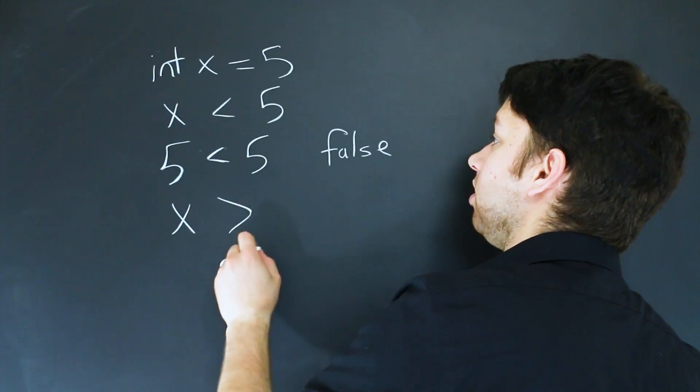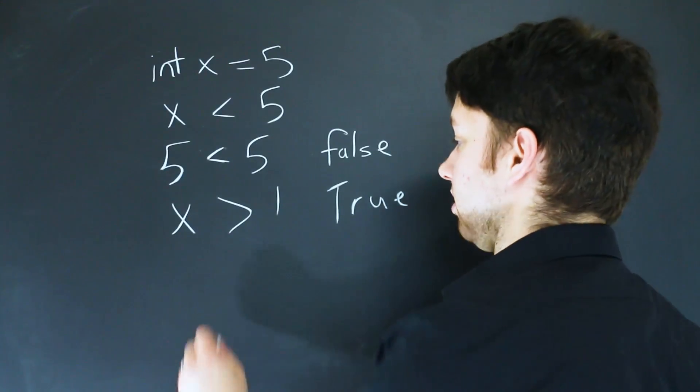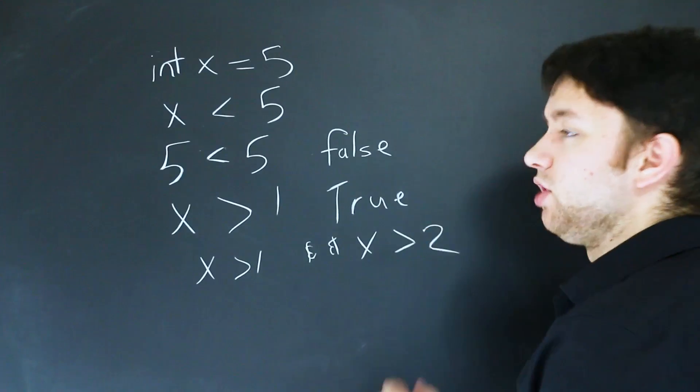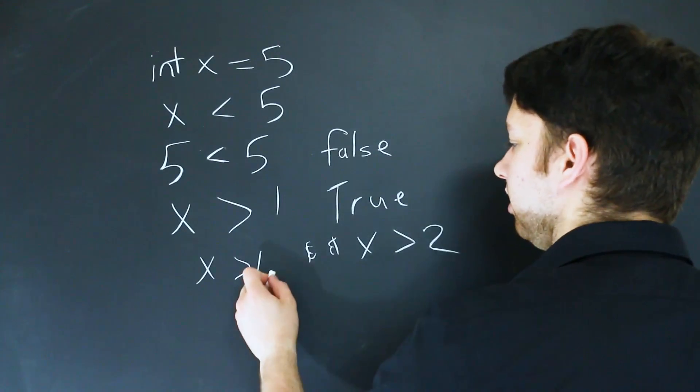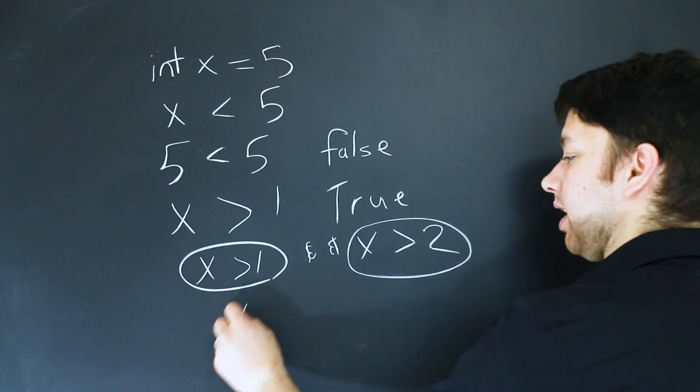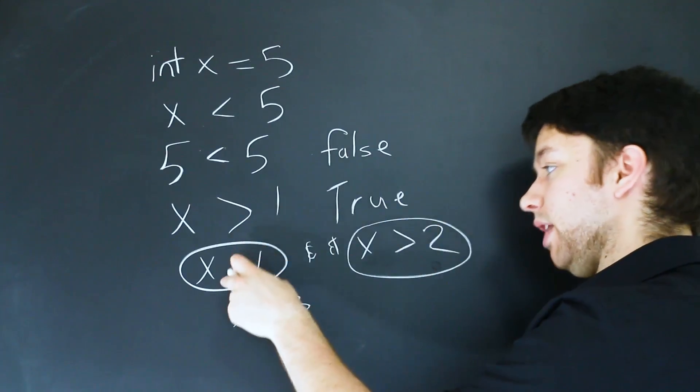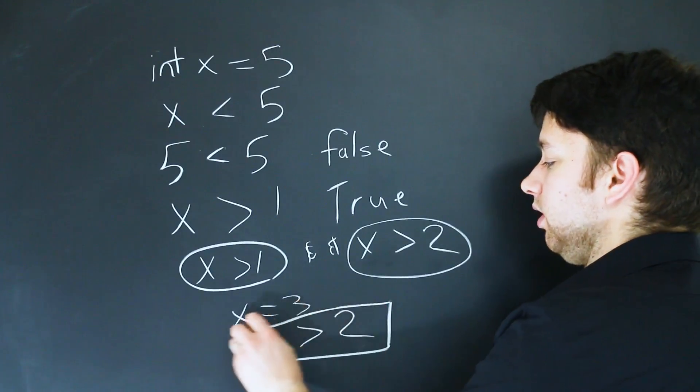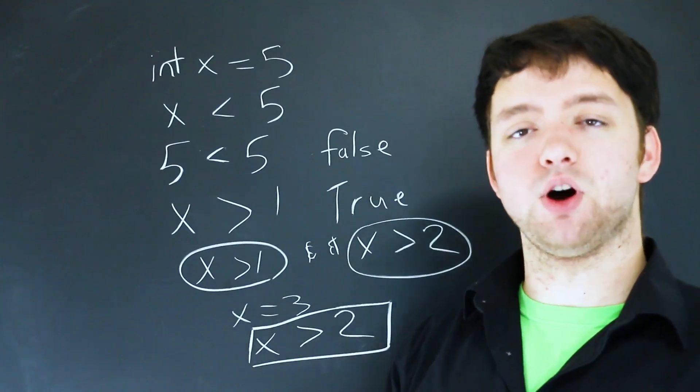But if we did something more obvious like x is greater than 1, this would be true. And then when you have logical operators, you can combine these things. So for example, if we had x is greater than 1 and x is greater than 2, these would both have to be evaluated as true. And in this situation, we can actually simplify this expression. Because if you think about it, if x is greater than 2, that automatically makes x greater than 1. So this could be simplified to just x greater than 2.